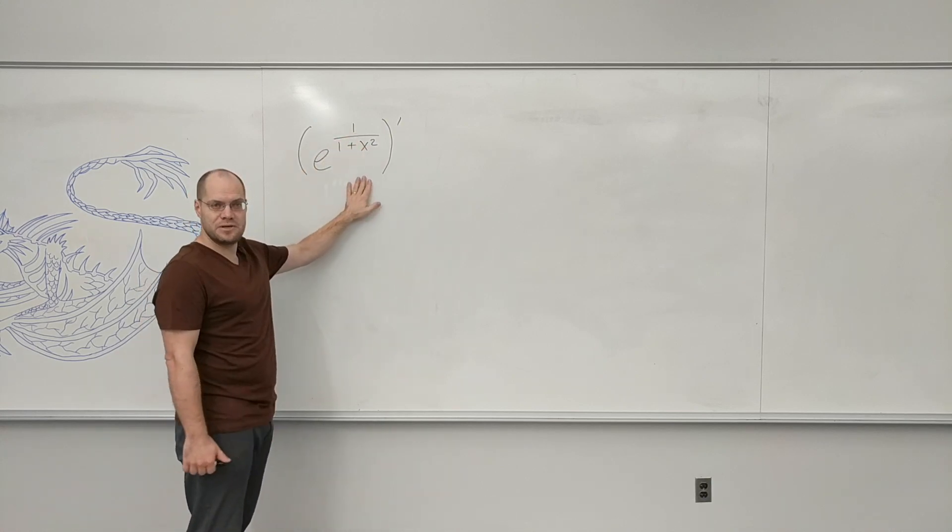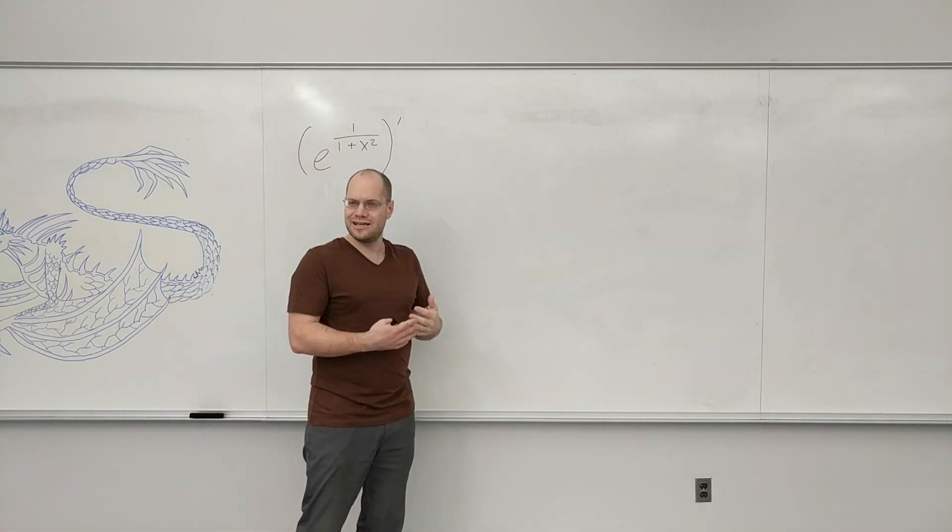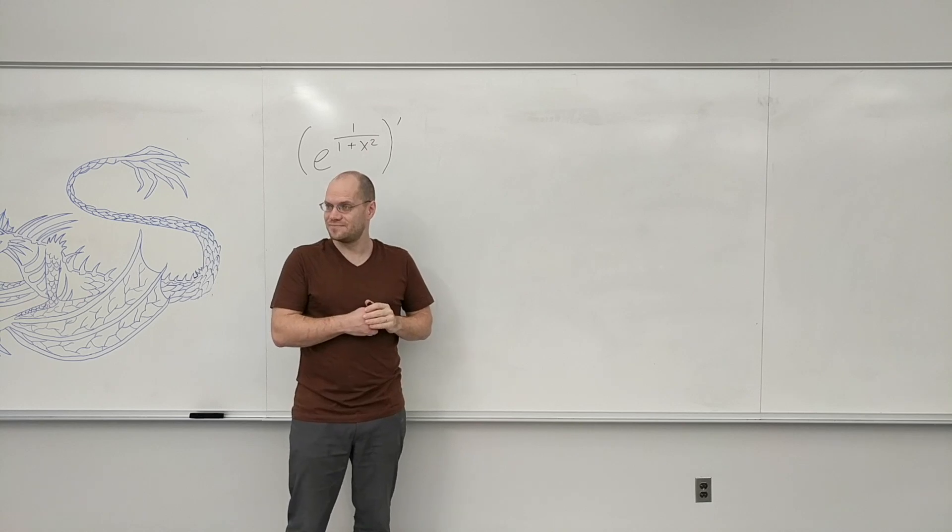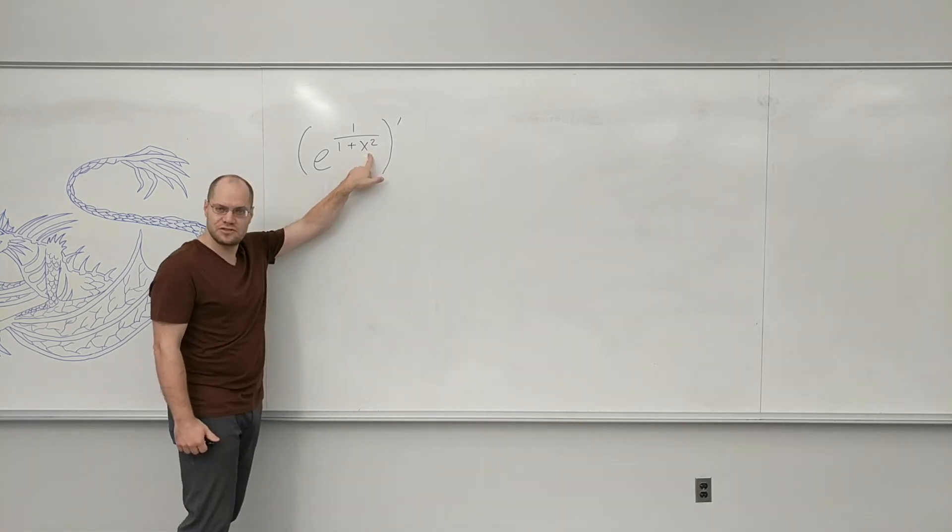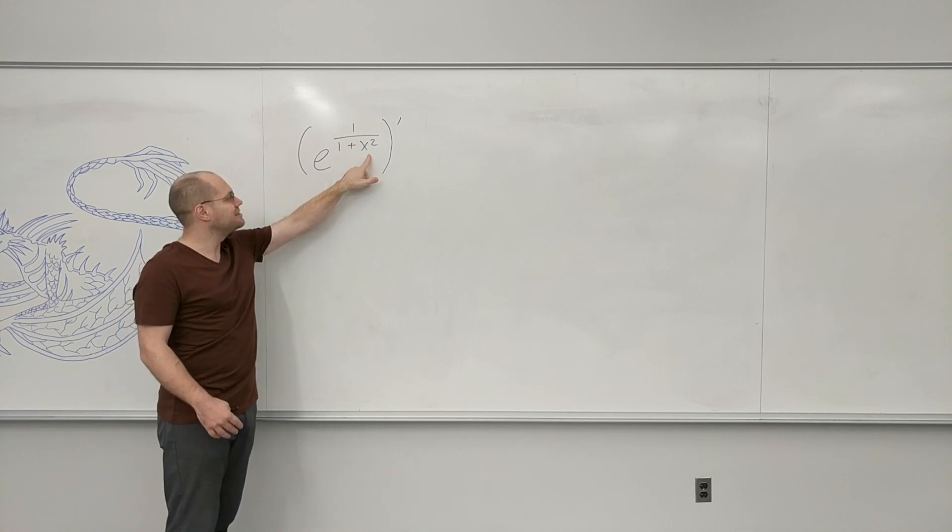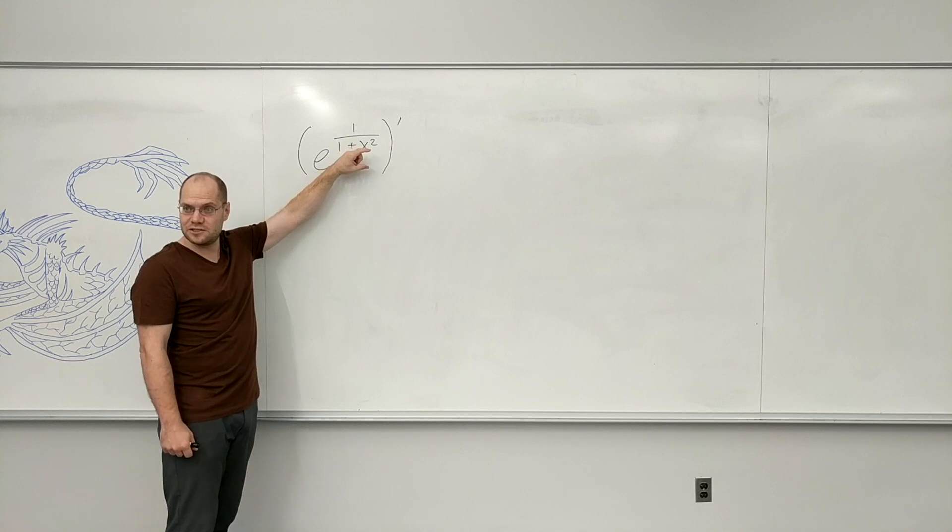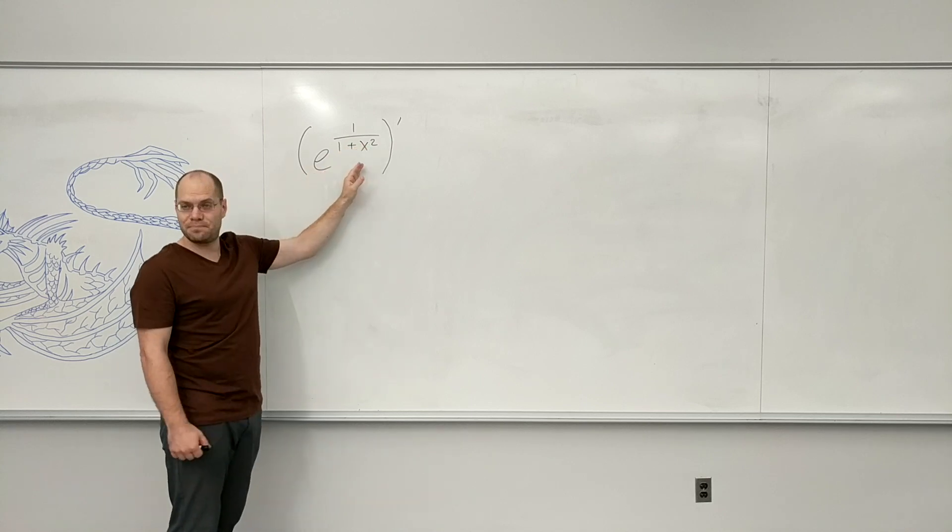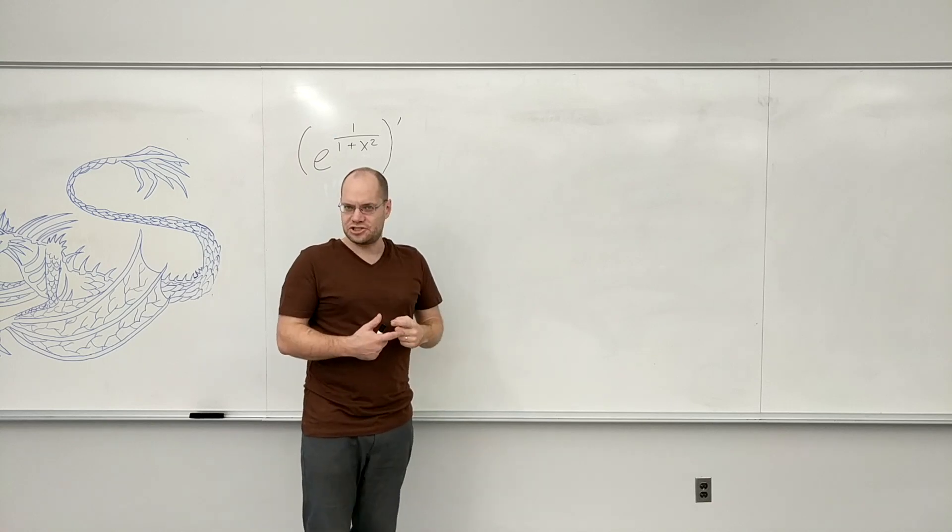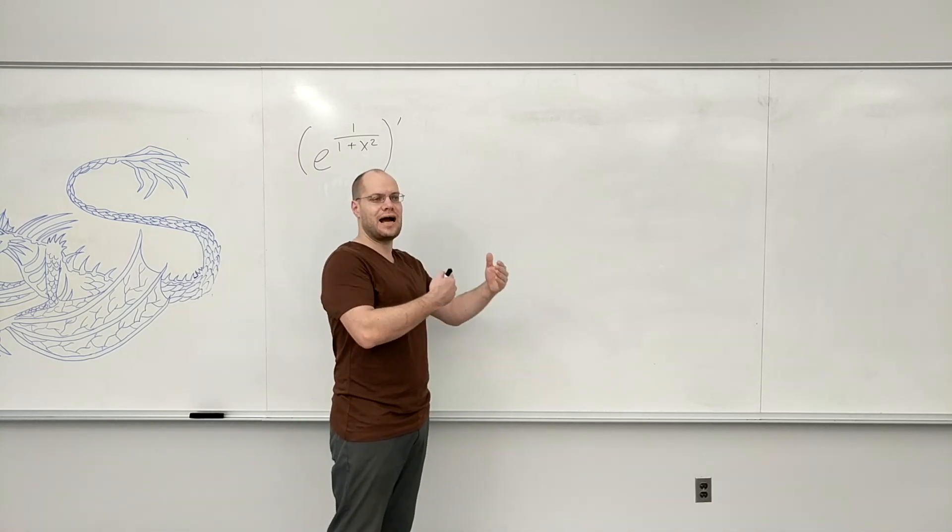You see lots of things mixed together, so you have to look at this function and name what it is. What you do last - because what you do first is square x, then add one to it, find one over that quantity, then raise e to that power - that's what you would do on a calculator.